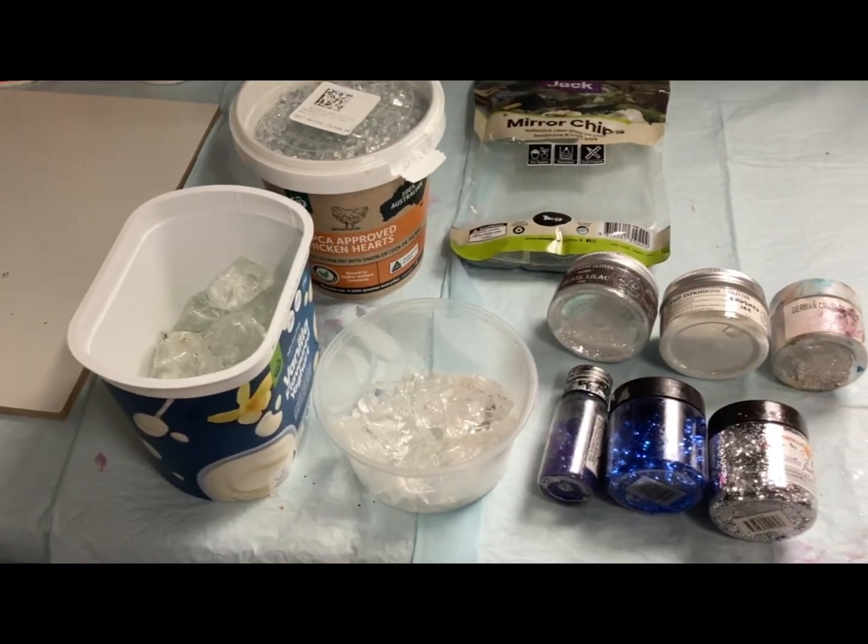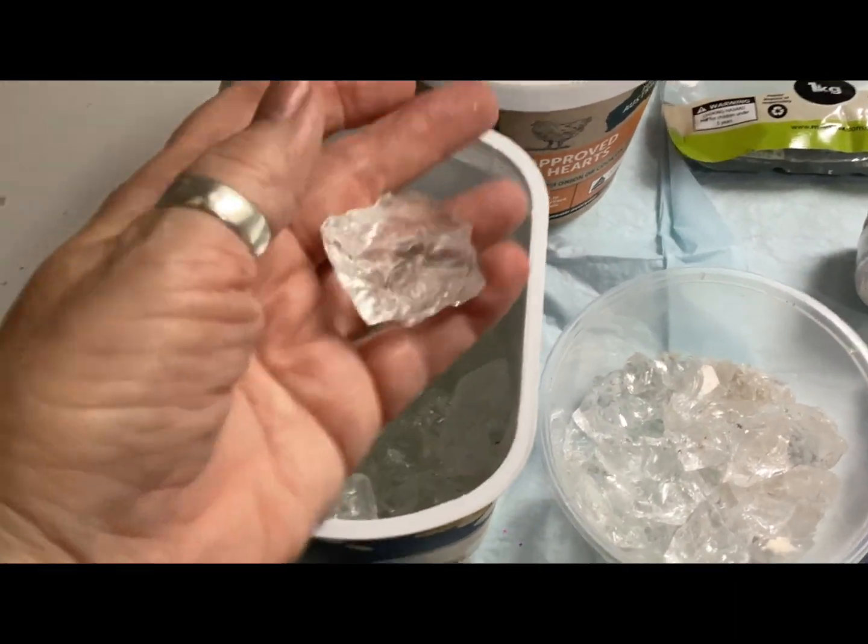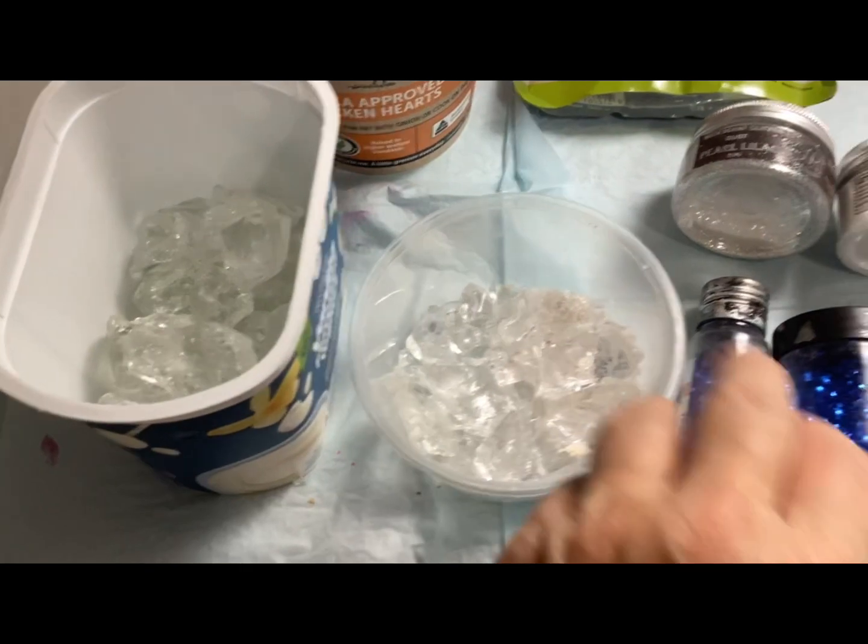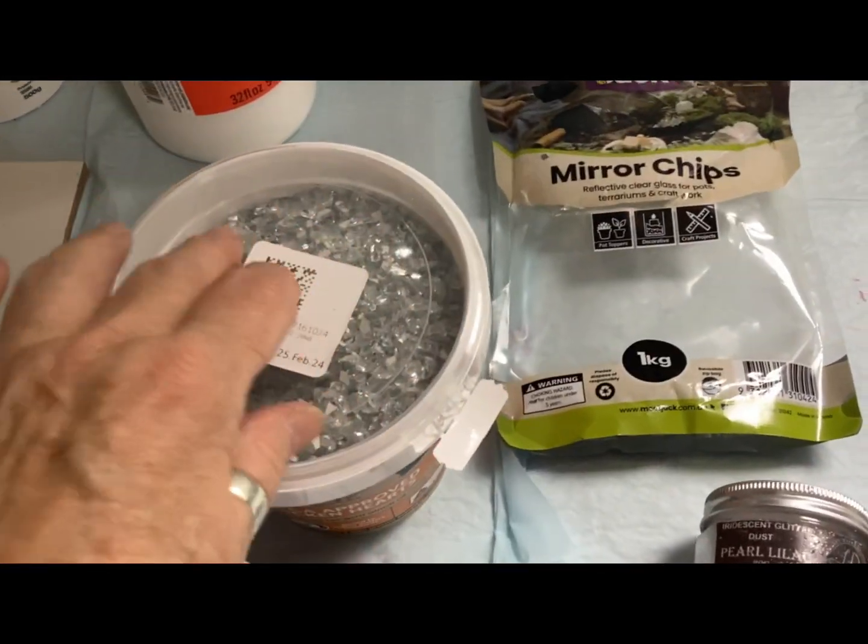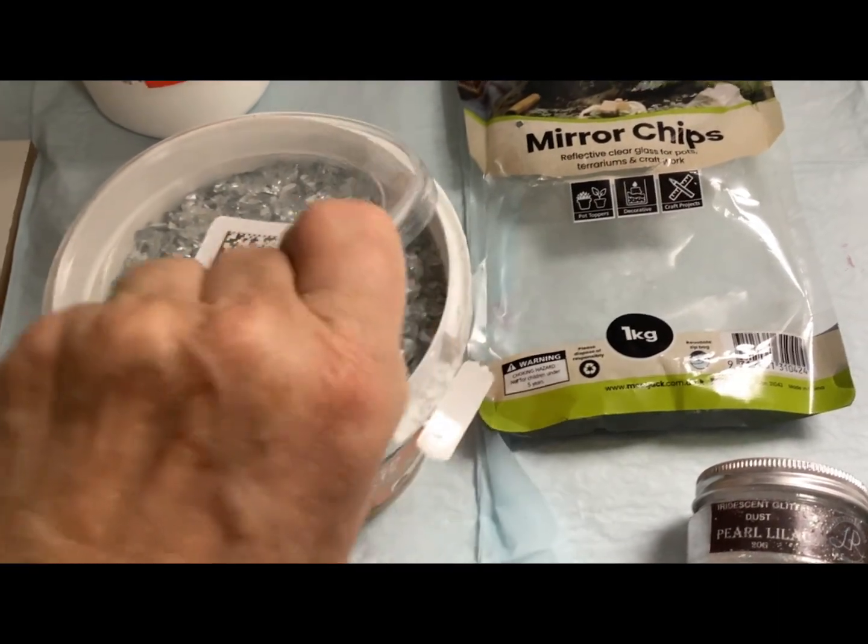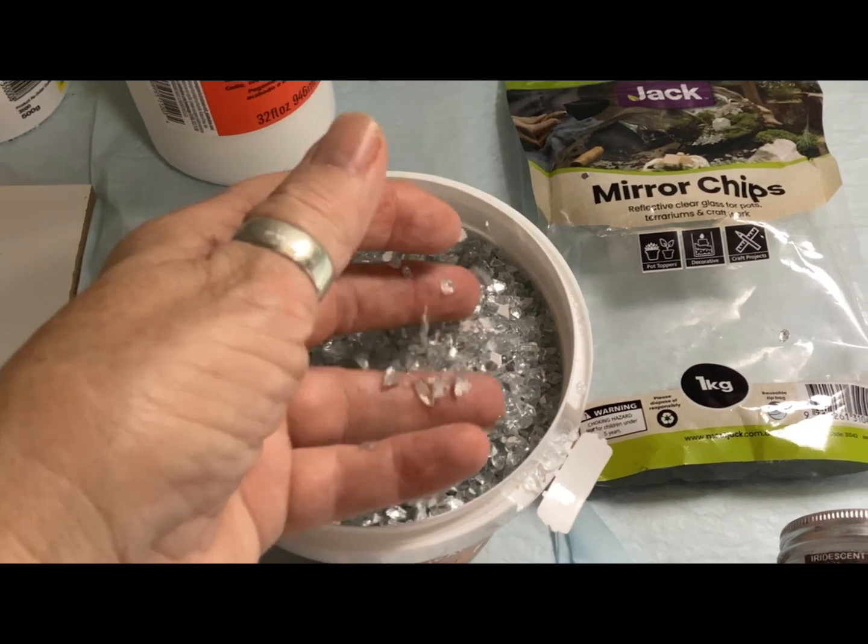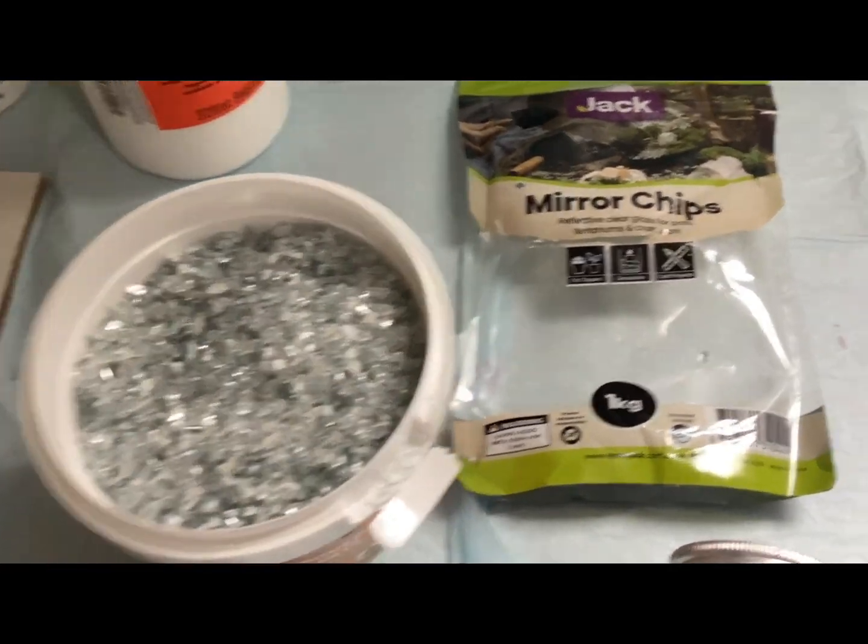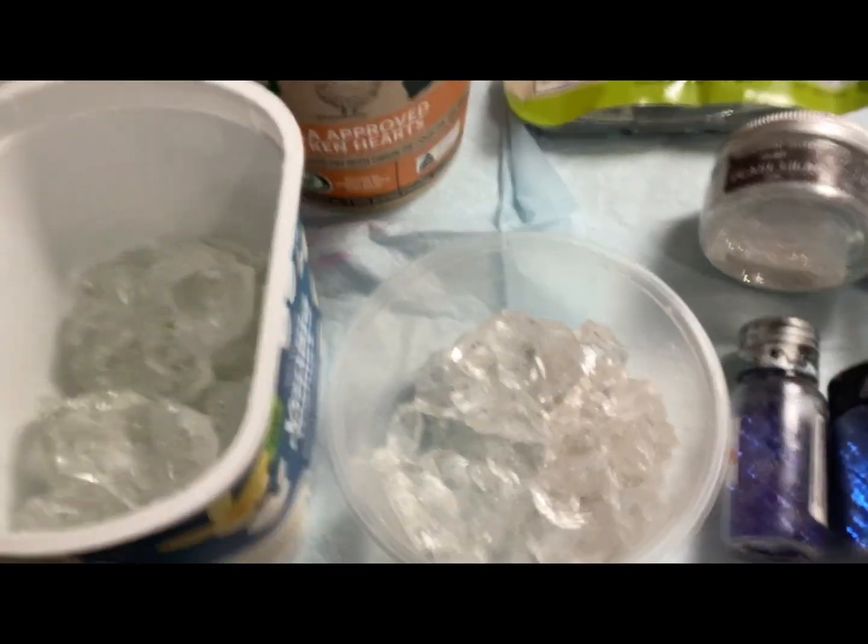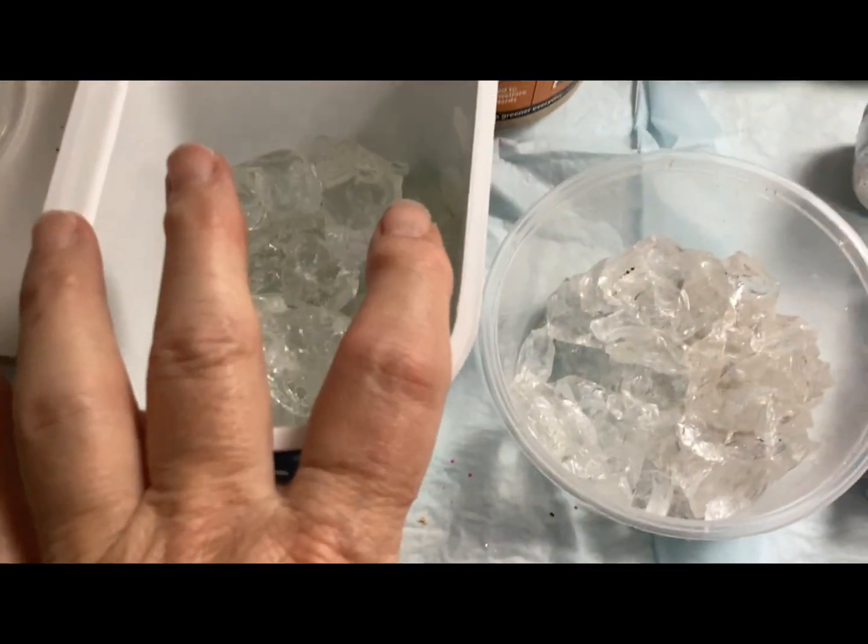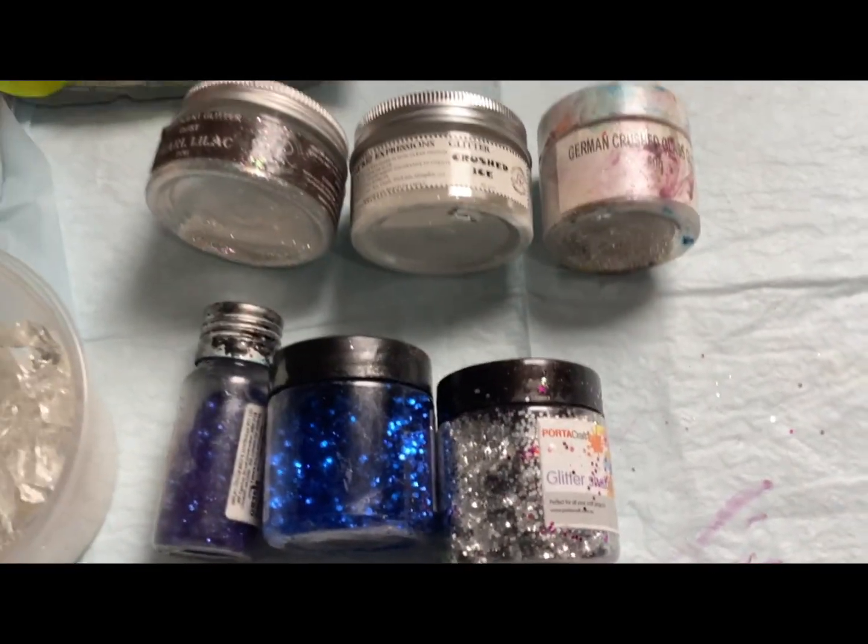These are the enhancements I'm going to be using today. This is crystal glass in large - I've smashed it and made some medium and small. And I'm also going to be using the mirror glass chips, which are beautiful. It's hard to get these. I've got these at Bunnings and these crystal glass come in really huge pieces and then I've smashed them up to different sizes.